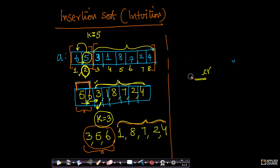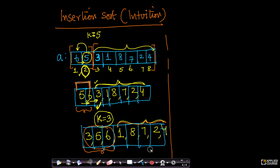Now let me draw the array again. So first element, second element, third element, fourth, fifth, sixth, seventh, eighth. Now let's take the fourth element, because we have already processed the second and third elements. So when I go to the fourth element, I'll store the fourth element in a variable K. So K equals 1 now.